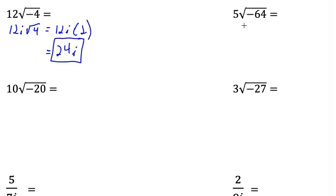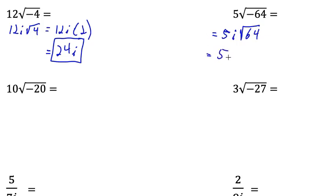Here's another one like that. We have a negative square root, so I'm going to pull that i out and turn that 64 into a positive 64. The square root of 64 equals 8. So 5i times 8, which equals 40i.